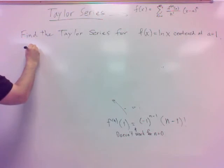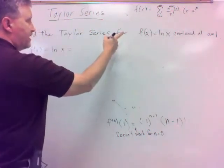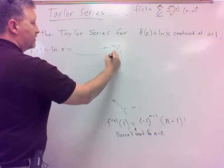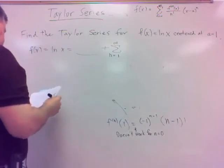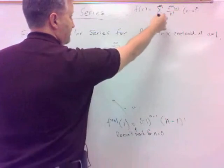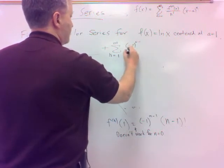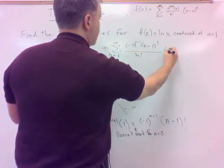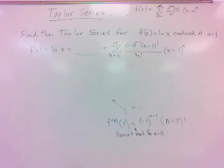So my series — f of x equals ln of x — we're going to separate out n equals 0. We're going to start at n equals 1 for this because that's where our formula works, from n equals 1 to infinity. Then I'm going to plug in the nth derivative formula at a, which is negative 1 to the n minus 1 times n minus 1 factorial, over n factorial, times x minus 1 to the n. So I've got everything figured out except for that zero term.